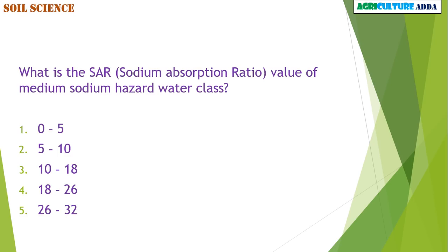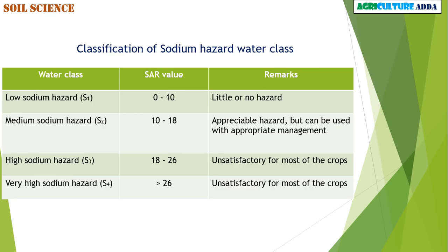What is the SAR (Sodium Absorption Ratio) value of medium sodium hazard water class? Options: 0 to 5, 5 to 10, 10 to 18, 18 to 26, or 26+. Refer to the table showing the classification of sodium hazard water classes.